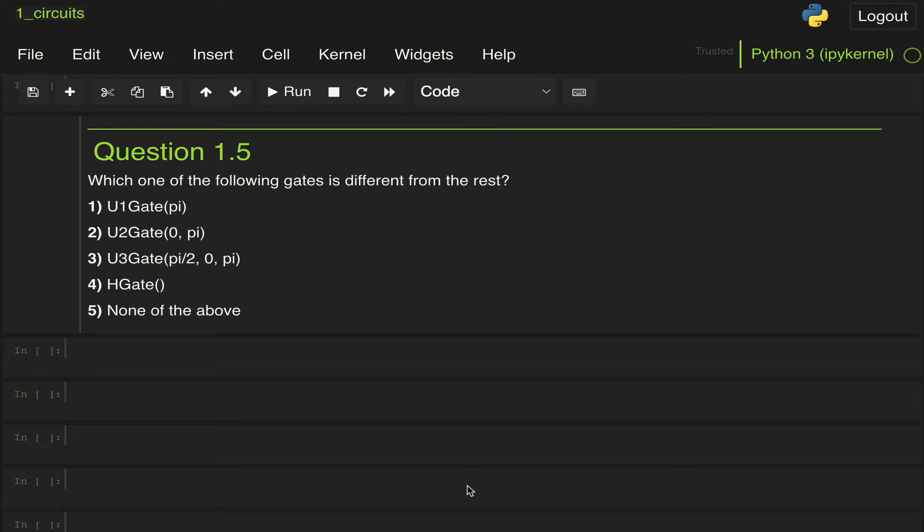We've reached the final problem of section one of this 2020 Qiskit Advocate exam. By reading this question, which asks which of the following gates is different from the rest, you can already see that this test is showing its age because some of these gates, the gates U1, U2, U3, have already been deprecated from Qiskit. But that's quite all right. We will explain them anyway and go over what they have been replaced by.